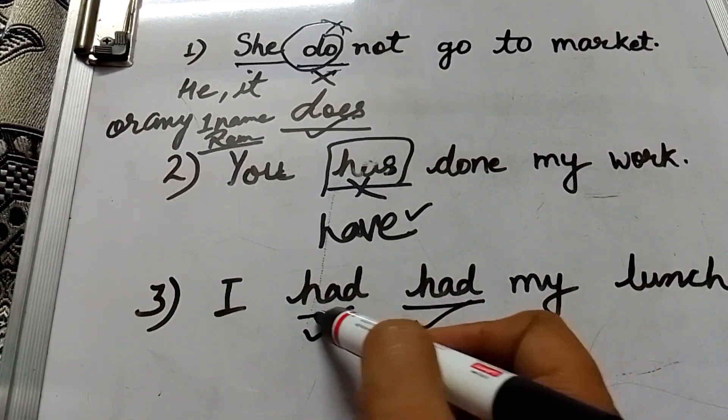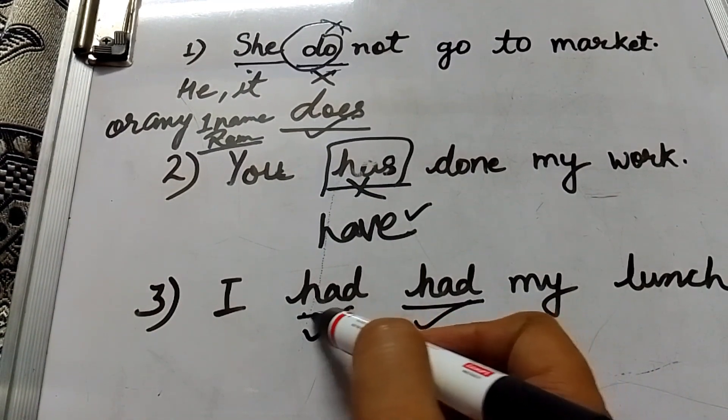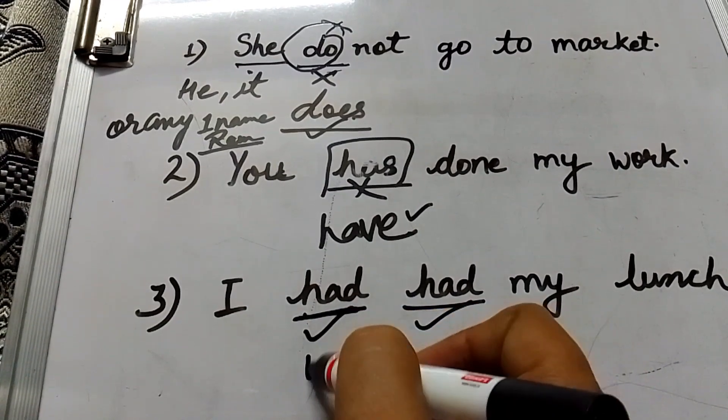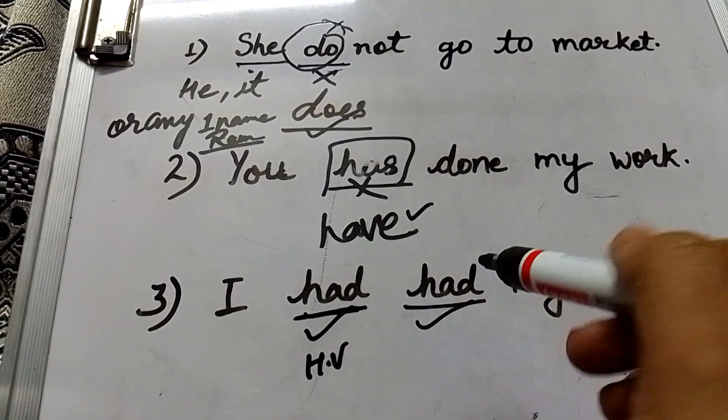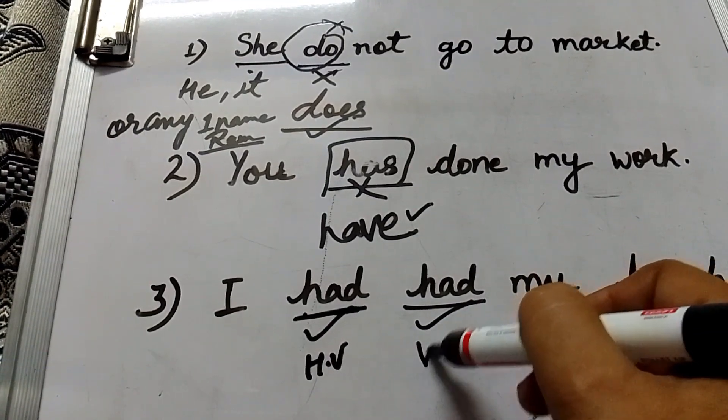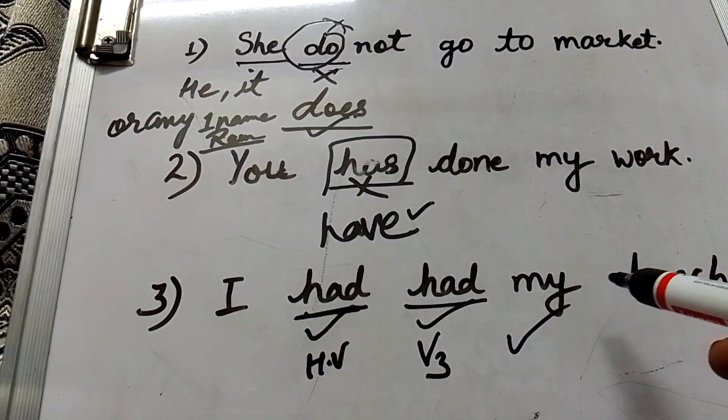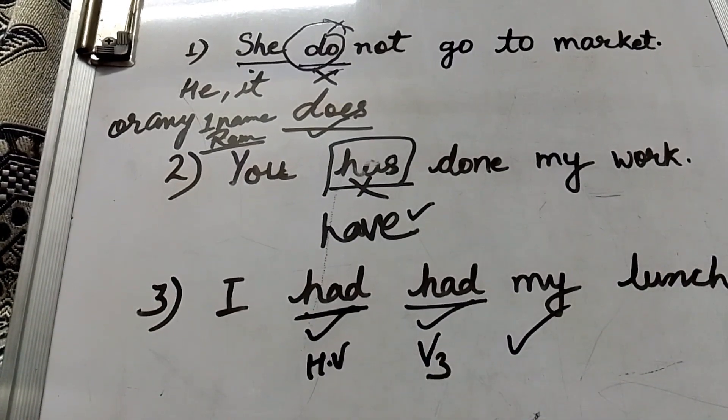So first had is helping verb. Both are correct. First had is helping verb and second had is verbs third form. So here is no mistake. I hope you understood. Thanks for watching.